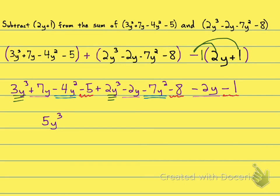All of the squares in blue, I have minus 4y squared minus 7y squared. So that's going to give me negative 11y squared.